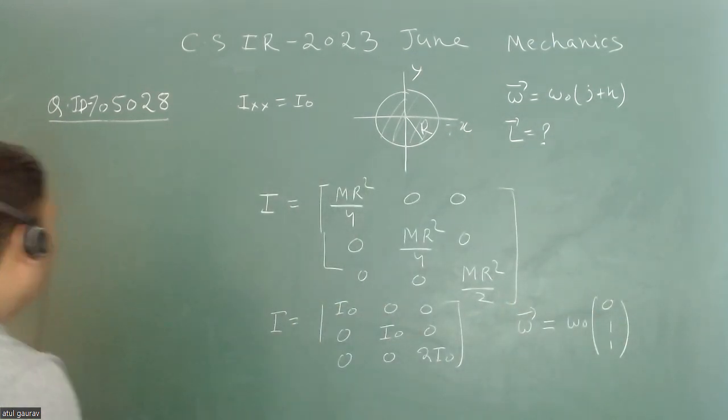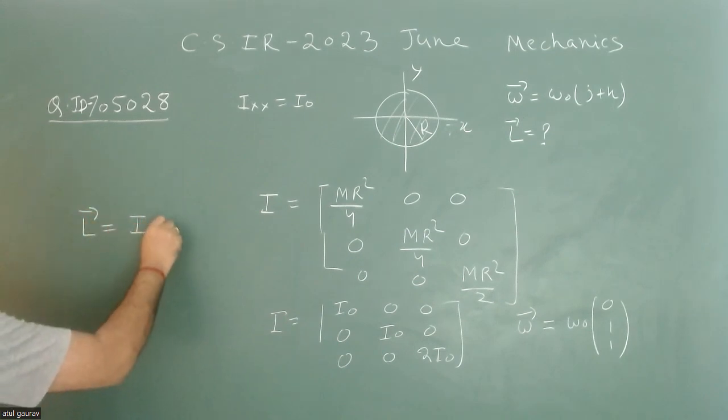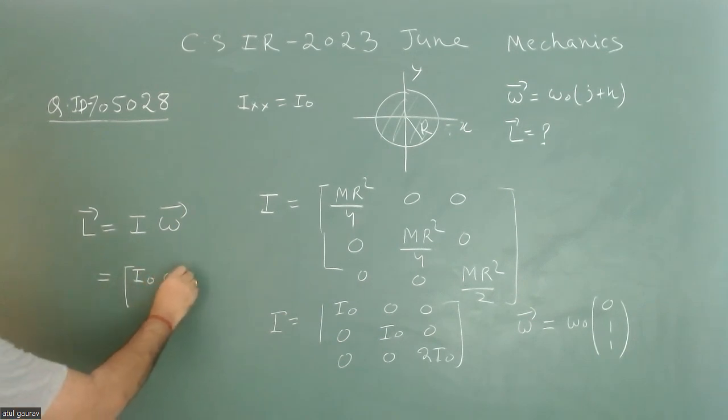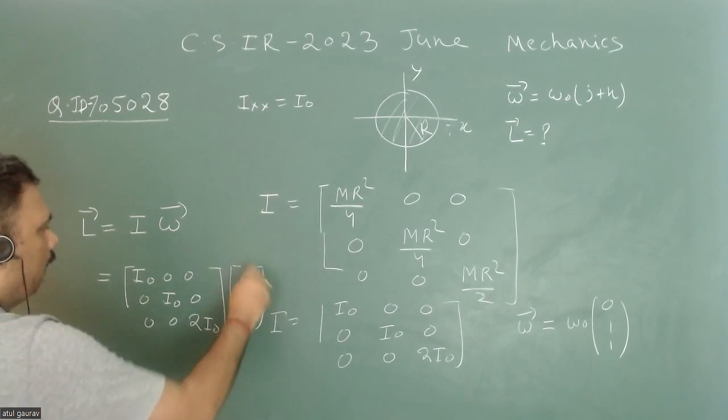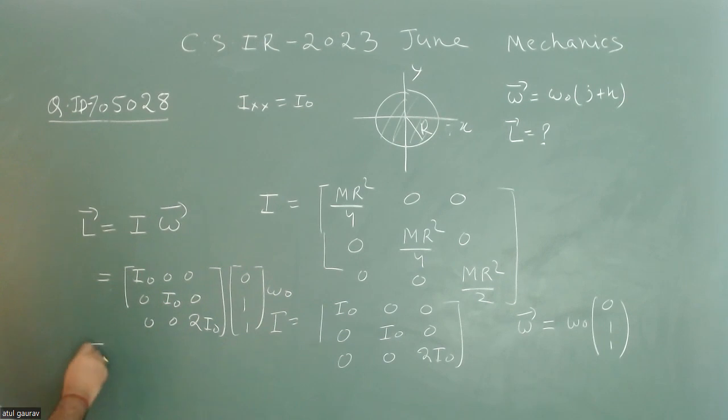What will be my angular momentum? We know that angular momentum L equals I times ω, where I is the moment of inertia tensor. When we put this, the value is I₀[0, 0, 0; 0, I₀, 0; 0, 0, 2I₀] times [0, 1, 1] with magnitude ω₀.